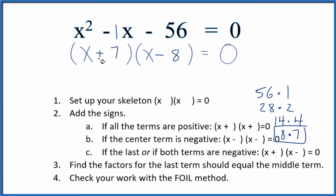So first terms, the outside minus 8x, inside plus 7x, and the last term minus 56 equals 0. If we look at these terms right here, minus 8x plus 7x, that gives us a minus x. So these are the same equations here: x squared minus x minus 56, x squared minus x minus 56. So we've done this correctly.